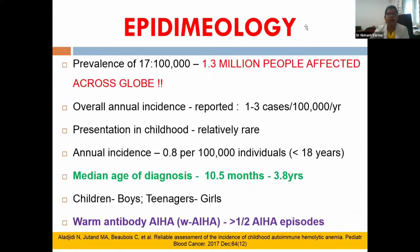The prevalence in the adult literature is about 17 per 100,000 population, meaning approximately 1.3 million people are affected globally. The overall annual incidence is reported to be around one to three cases per 100,000 per year. In children this presentation is relatively rare, with incidence of only 0.8 per 100,000 individuals, and the mean age of diagnosis is as early as 10 months up to four years.